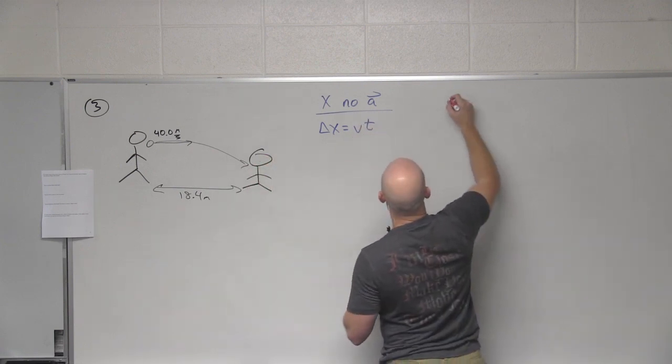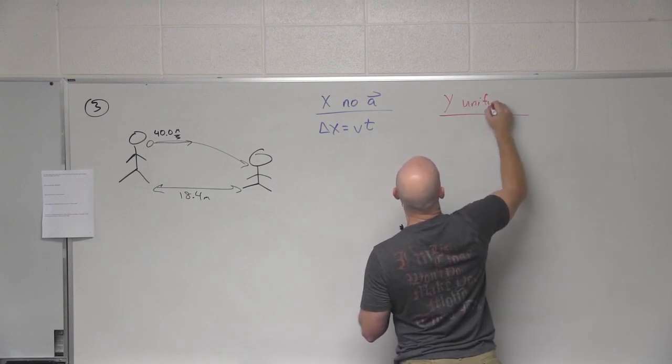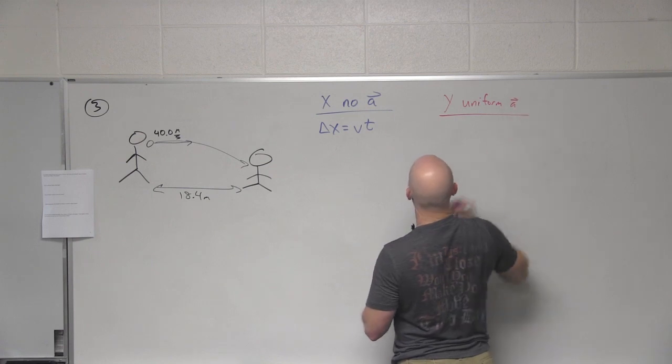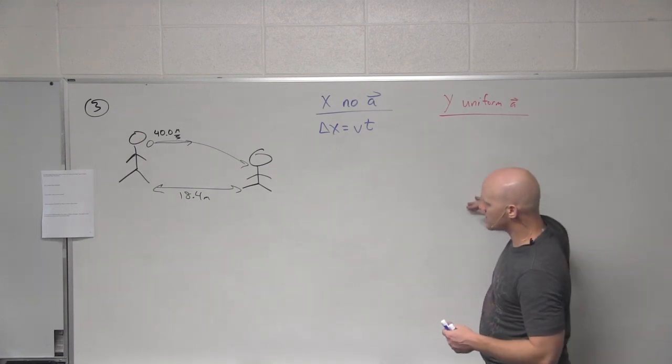In the vertical direction? What's true? Yeah, we got uniform acceleration due to gravity. In this case, 9.8 meters per second squared downward. All right. Whole host of equations we might want to use. In this case,